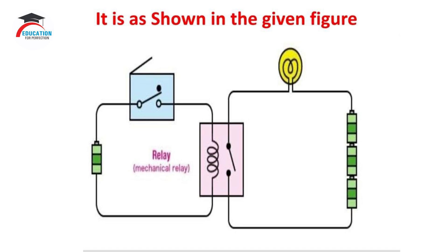Let us try to understand the working of a relay as shown in the given figure. The relay circuit consists of two parts, that is the primary and the secondary part. At the primary part, the circuit consists of a coil and a mechanical switch. And when an electrical power supply is given to the end terminals of the coil, the coil becomes electromagnetized which in turn attracts the mechanical switch to close the circuit, due to which the current flows in the secondary part of the relay circuit.